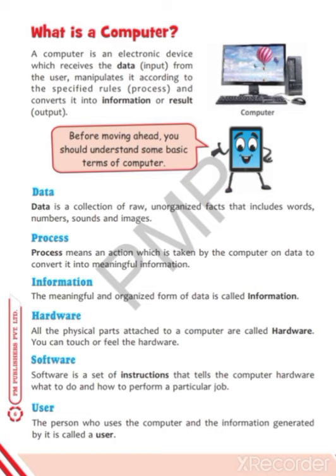Now, what is information? The meaningful data — the output which we get from the computer after doing the processing — is called information. What is hardware? All the physical components attached to the computer are called hardware, like mouse, CPU, keyboard, and printer. All the devices which we can touch and feel are called hardware devices. What is software? Software is a set of instructions that tells the computer hardware what to do and when to do it — like MS Paint, Windows, and MS Office. All the software installed in the computer, which we cannot touch, is called a set of instructions. Now, what is a user? User means who uses the computer — the person who uses the computer. Like when we are using the computer, we are the user.